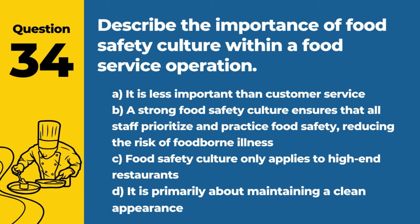Question 73. Explain the concept of farm-to-fork traceability and its importance in food safety. Answer: B. Tracking the food's journey from production to the consumer to enhance food safety and quality. Farm-to-fork traceability is crucial for identifying and managing food safety risks throughout the supply chain.